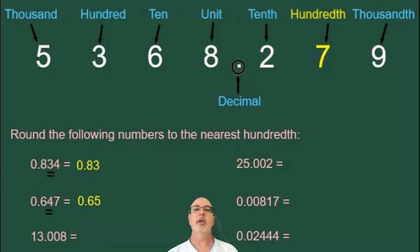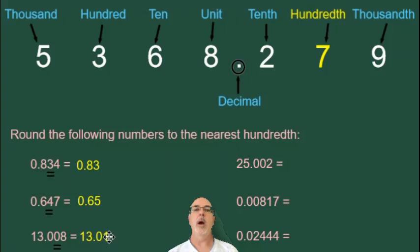The next example is 13.008. This 0 is in the hundredth position, and the number to the right of it is an 8, which is bigger than 4, so we are rounding up. 13.01 is our answer.